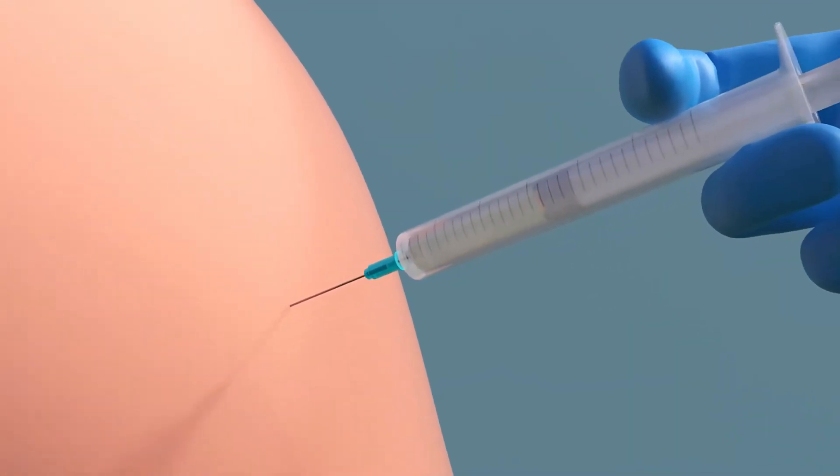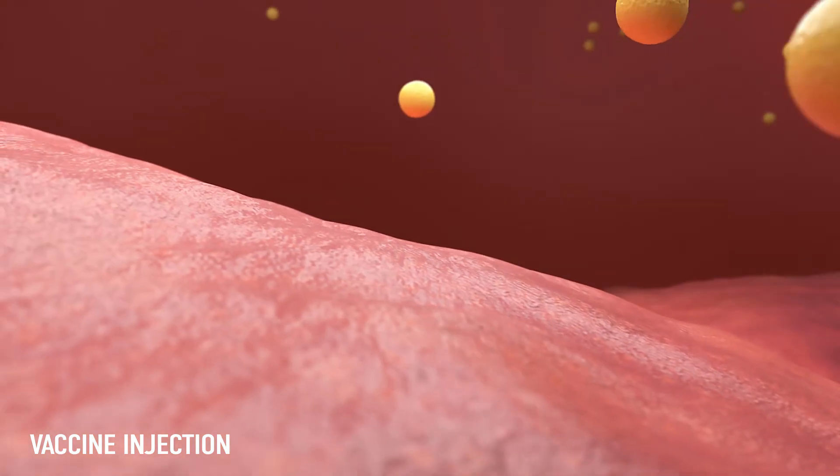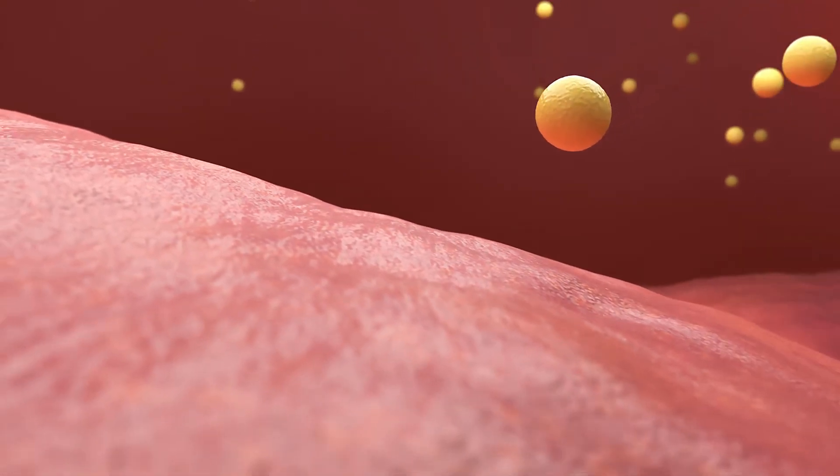Vaccines injected into our body through intramuscular injection enter surrounding cells and deliver mRNA into the cytoplasm.